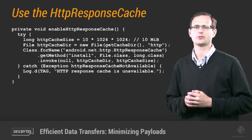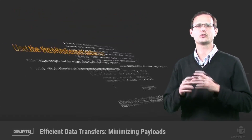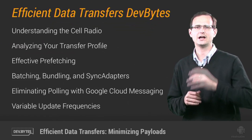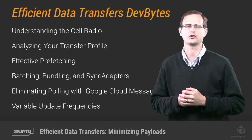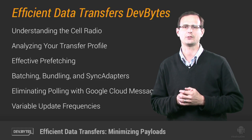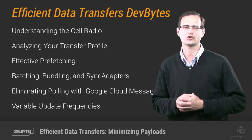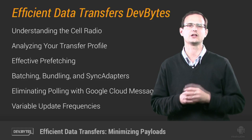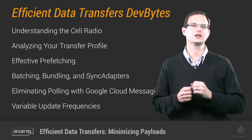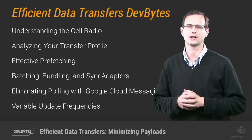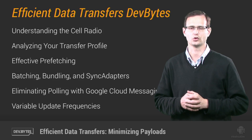Throughout this series of DevBytes on efficient data transfers, we've explored how the cell radio works and how a state machine can affect the battery efficiency of your apps. Armed with that knowledge, you learned to analyze your network traffic and use techniques like prefetching, batching, and bundling, supported by sync adapters and Google Cloud Messaging to make your apps more efficient.